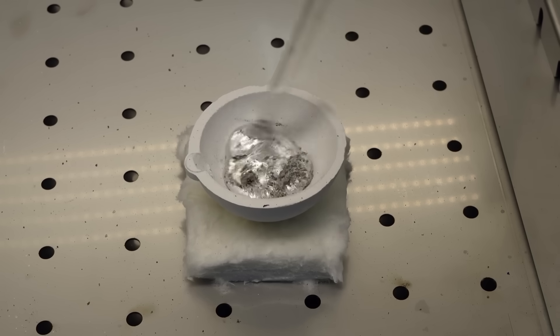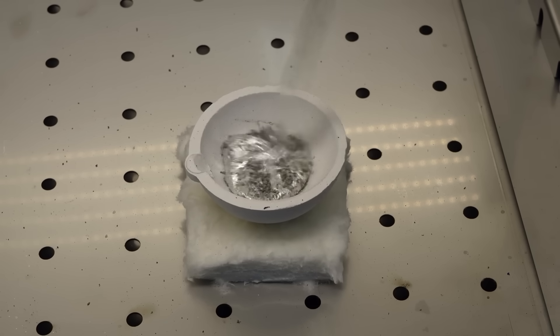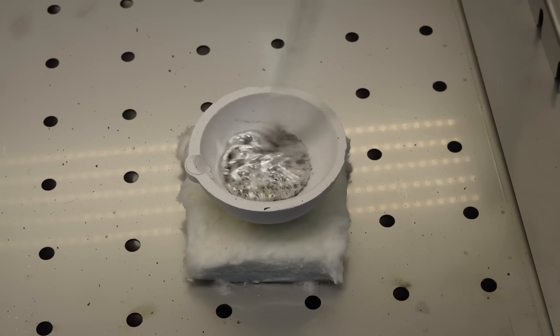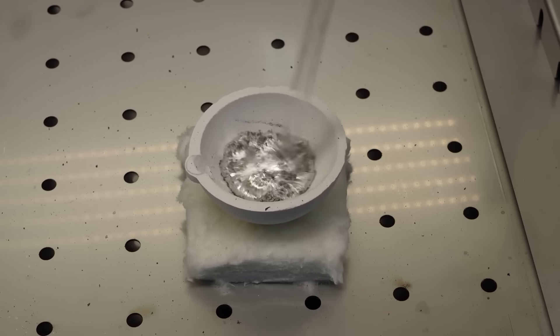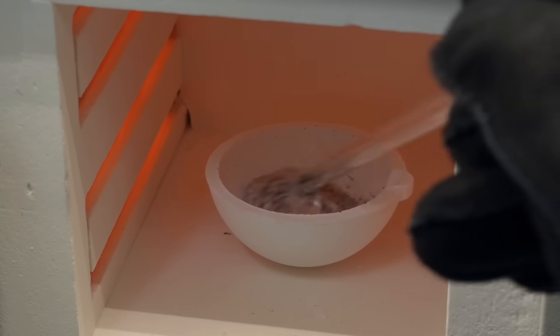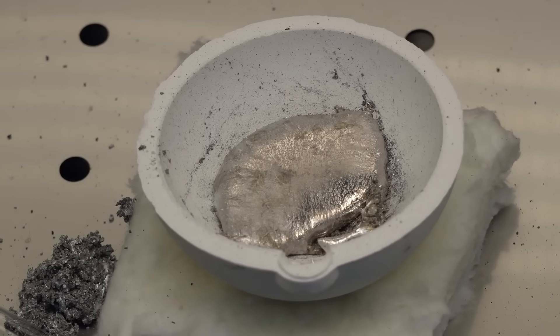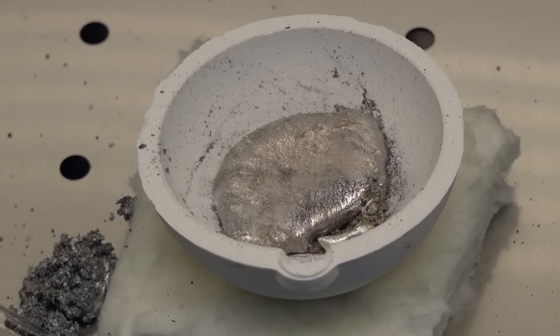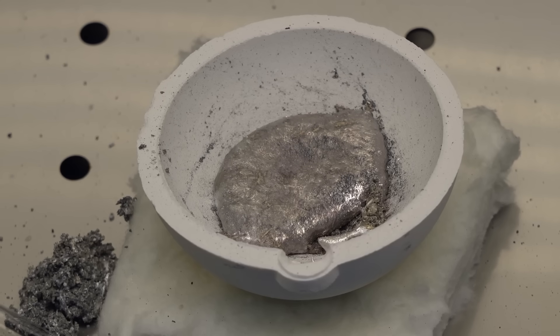While everything is melting there, it's time to weigh out another reagent that will foam the alloy, namely titanium hydride. These yellowish granules are a compound of titanium with hydrogen, which some scientists today suggest using for hydrogen storage. The thing is, when this substance is heated, it releases pure hydrogen, which can be used for various purposes, for example, as fuel.